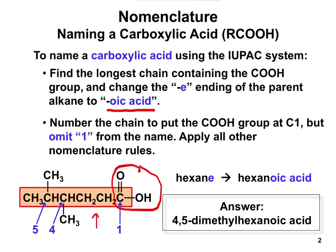Then we name and number the substituents just like with other molecules. One key rule: we always put the carbonyl carbon — the carbon attached to the oxygen with the double bond — as carbon number one. So your carbonyl carbon is always carbon number one when doing the numbering. That's why in this case it would be 4,5-dimethylhexanoic acid, because we number carbons from right to left.